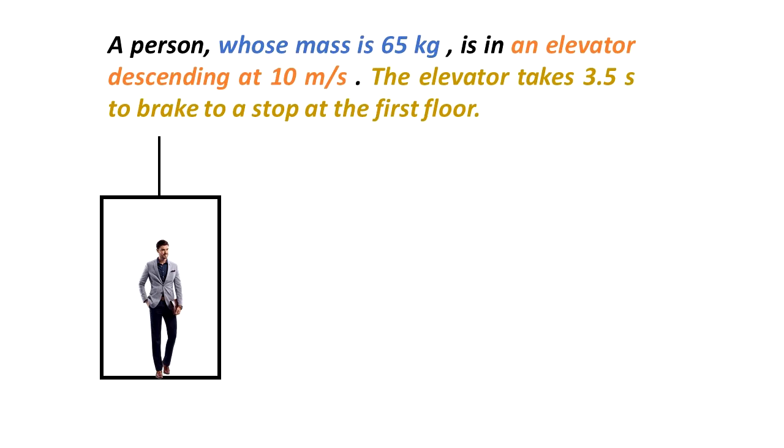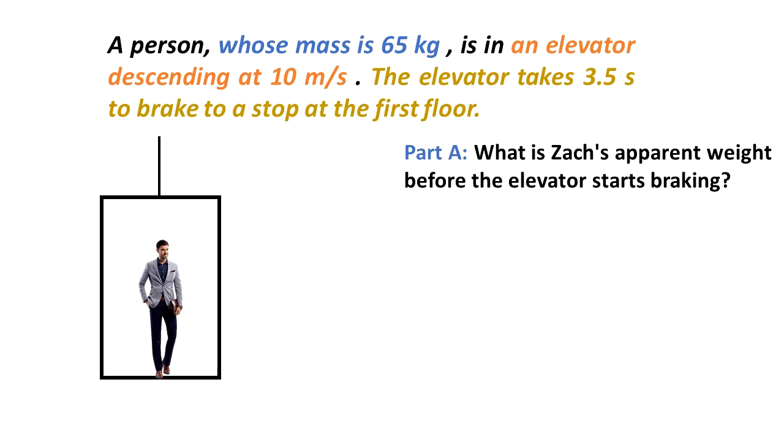A person whose mass is 65 kilograms is in an elevator descending at 10 meters per second. The elevator takes 3.5 seconds to brake to a stop at the first floor. Part A: What is the person's apparent weight before the elevator starts braking?